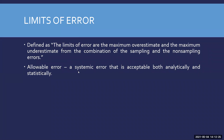Allowable error is a systematic error that is acceptable both analytically and statistically. You will hear this term in the lab frequently when talking about external quality control and the accuracy of testing. It is a systematic error that must pass both analytical and statistical limits. There is no single exact value for this — it is derived, and the definition of limits of error provides the framework for that.